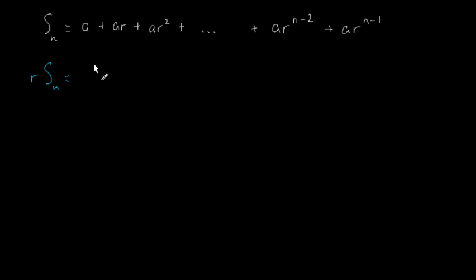A becomes ar, ar times r is ar squared, ar squared times r is ar cubed plus dot dot dot plus this times r would be ar to the power of n minus 1 plus this times r would be ar to the power of n.